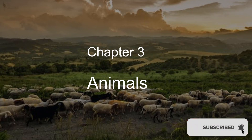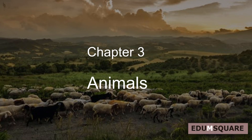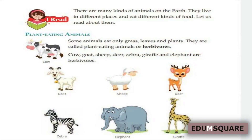Good morning dear students. Today let's discuss about our chapter 3, Animals. There are many kinds of animals on the earth. They live in different places and eat different kinds of foods. Based on the kinds of foods, animals are three types.